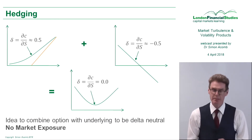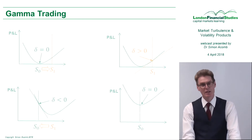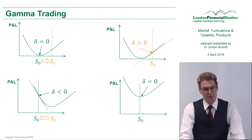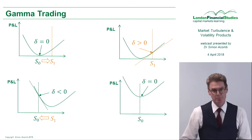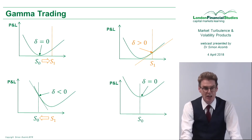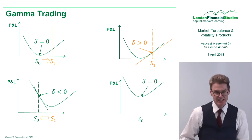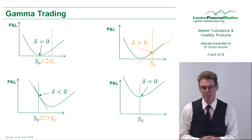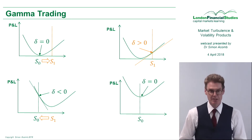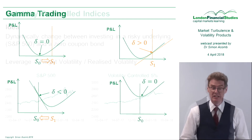So how can that move markets? Let's take the following example. Suppose that I'm long an option and the underlying price starts off at level S0, and I've done this delta hedging — I've traded half of the underlying and I've got myself zero market exposure, as you can see in the top left-hand chart here.